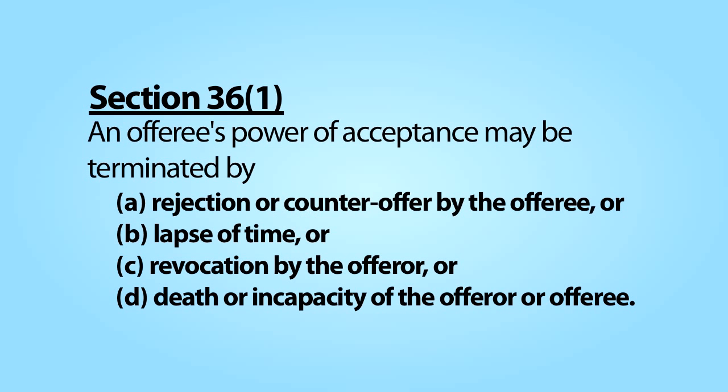Section 36 of the restatement indicates several ways in which an offeree's power of acceptance can be terminated, one of which we explored in the last module: revocation of the offer by the offeror. Let's look at the other ways in which the offeree's power of acceptance can be terminated.